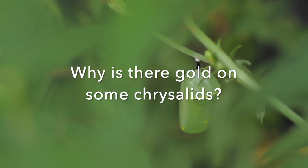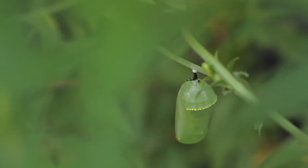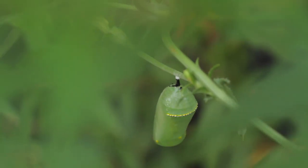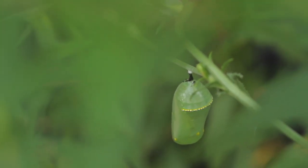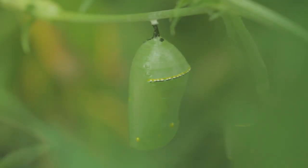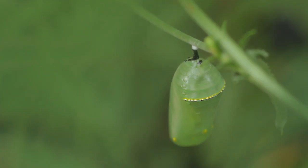You may have noticed the gilded gold highlights on some butterflies' chrysalids. Chrysalis actually comes from the Greek word chrysos, meaning gold. In the case of monarch butterflies' chrysalis, the crown of gold points called the diadem likely comes from the carotenoid pigments inside the milkweed plants they eat. Carotenoids are pigments that make something yellow, orange, or red — such as carrots.